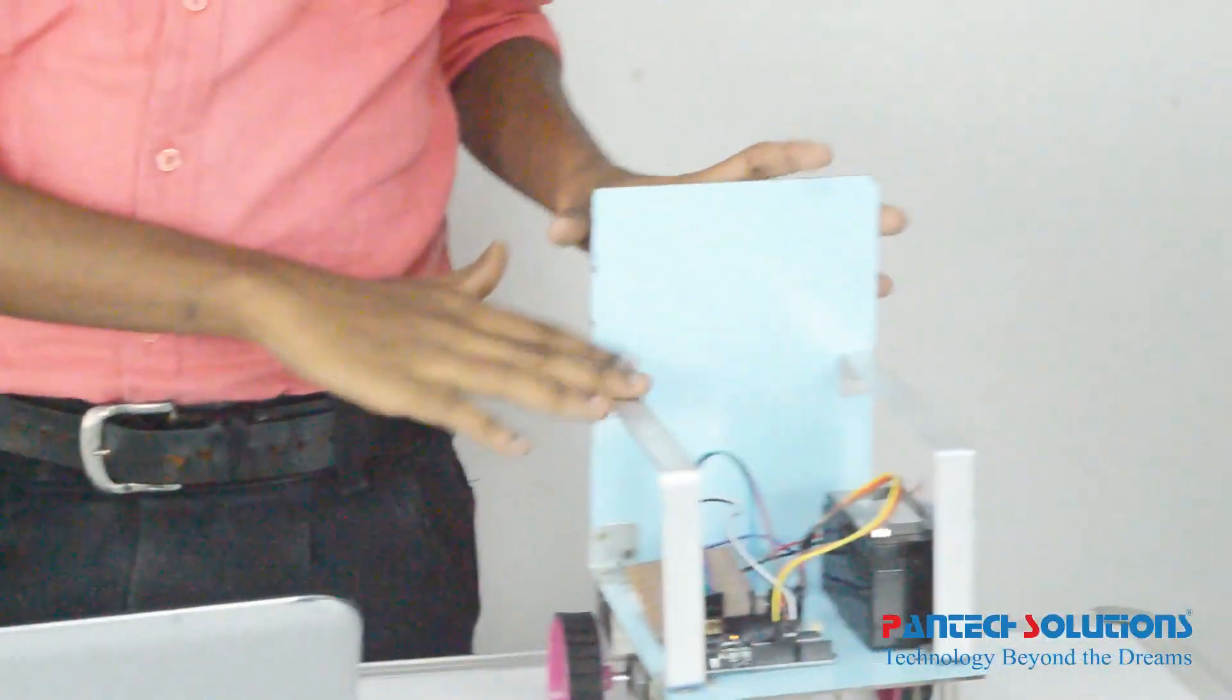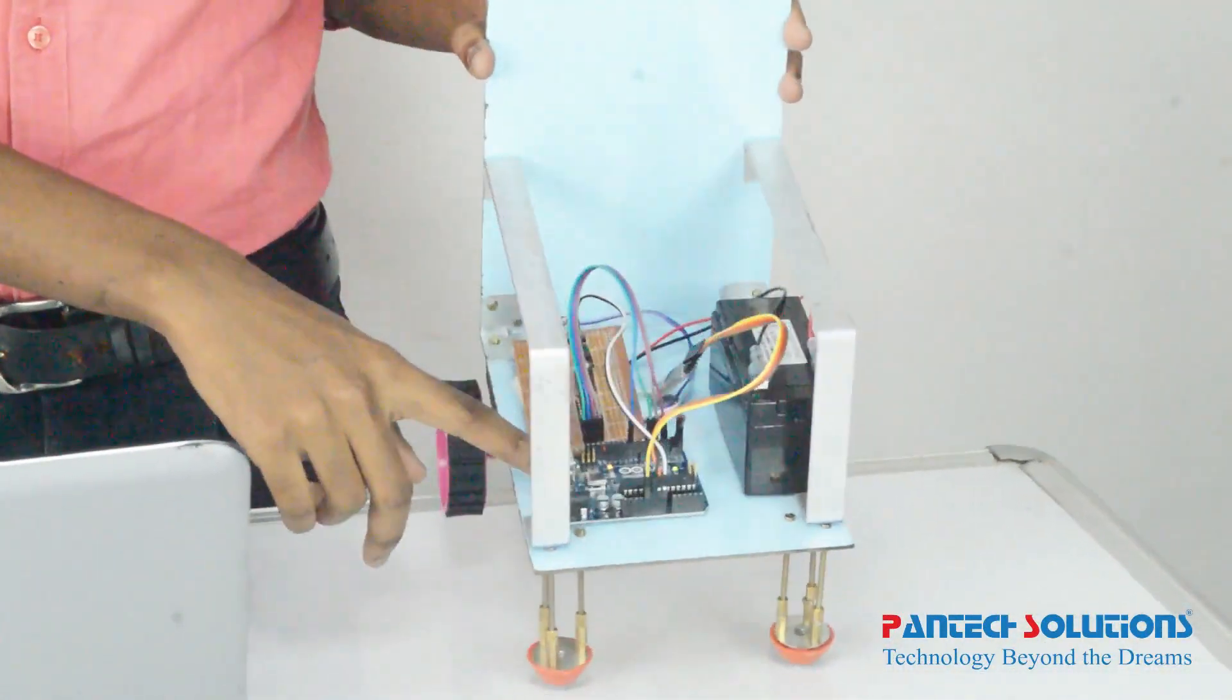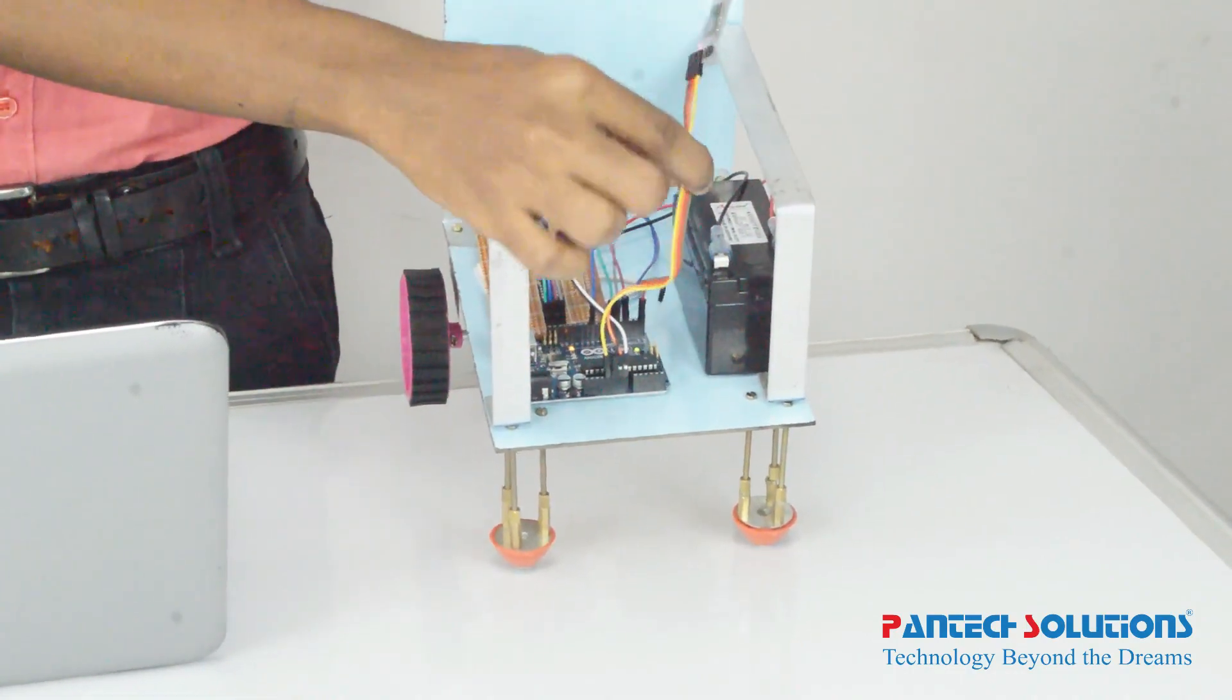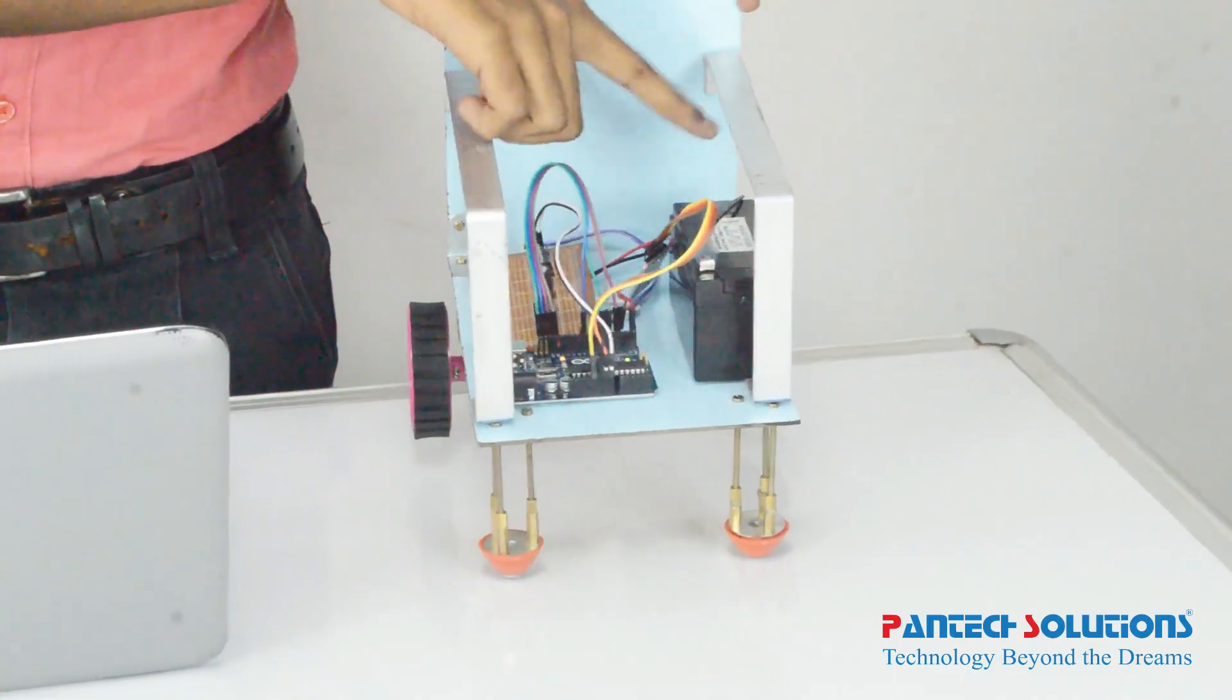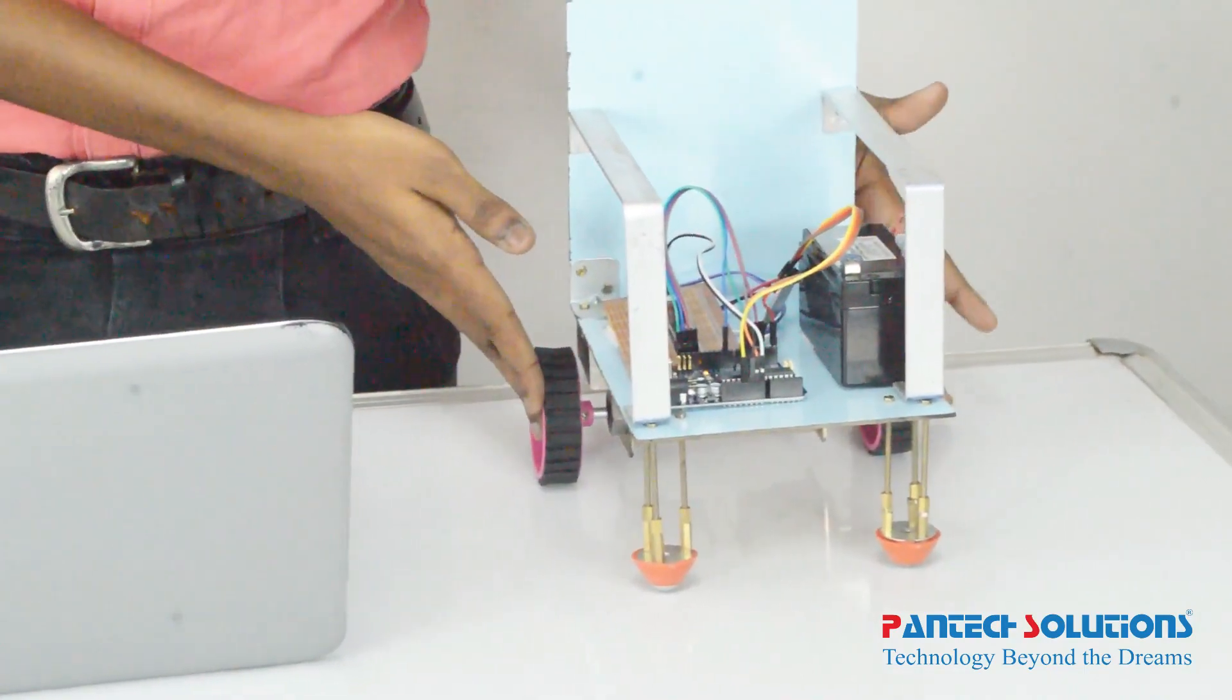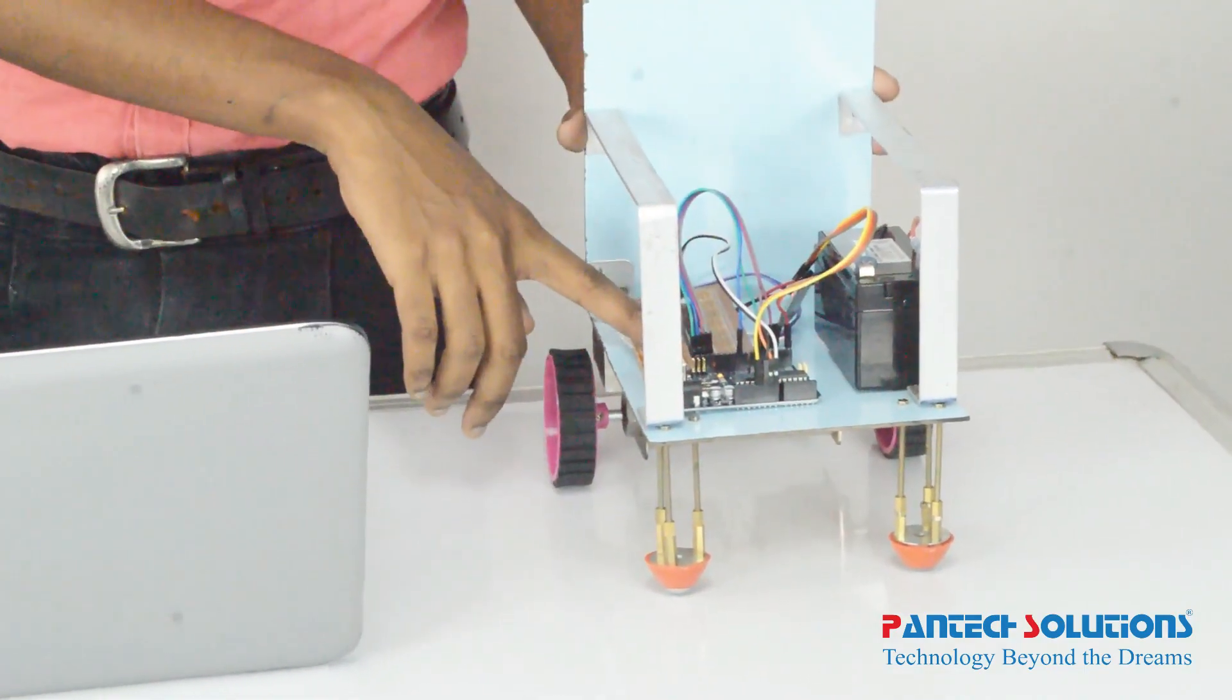So before that, here this is a miniature wheelchair which contains an Arduino microcontroller, which will make it a wireless electric computer. For power supply, I am using a battery. This miniature wheelchair contains two motors. Here it contains a motor driver IC.